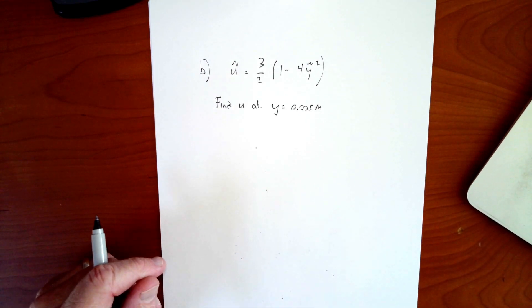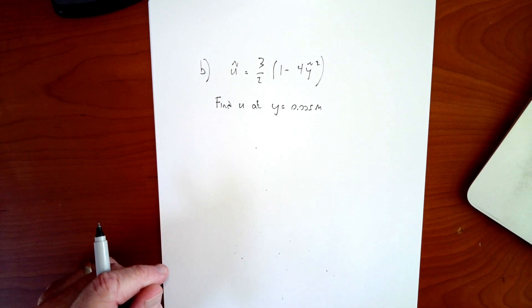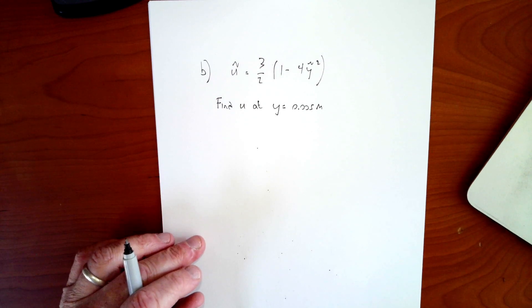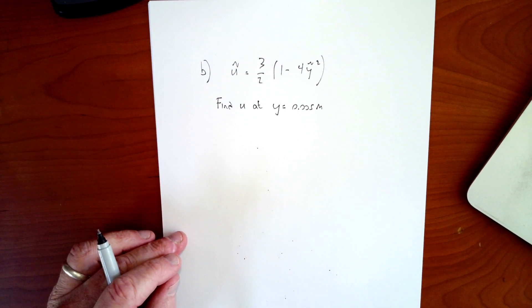Part B of the problem asked me to find the velocity at a particular position at y equals 0.005. That is halfway from the middle to the top of the channel.